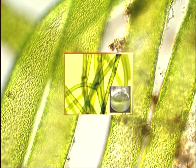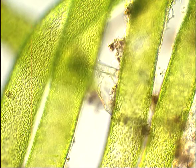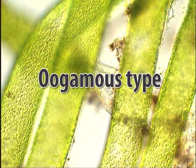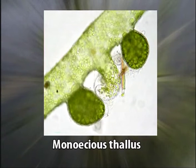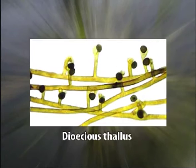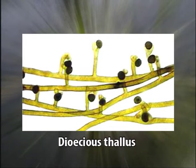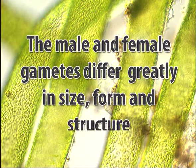All species of Vaucheria reproduce sexually. It is oogamous. Most species are monoecious, that is homothallic, and are exclusively freshwater or terrestrial forms. Species such as Vaucheria dichotoma, which are marine, are dioecious, that is heterothallic. The male and female gametes differ greatly in size, form, and structure, and are produced in distinct and specialized sex organs.